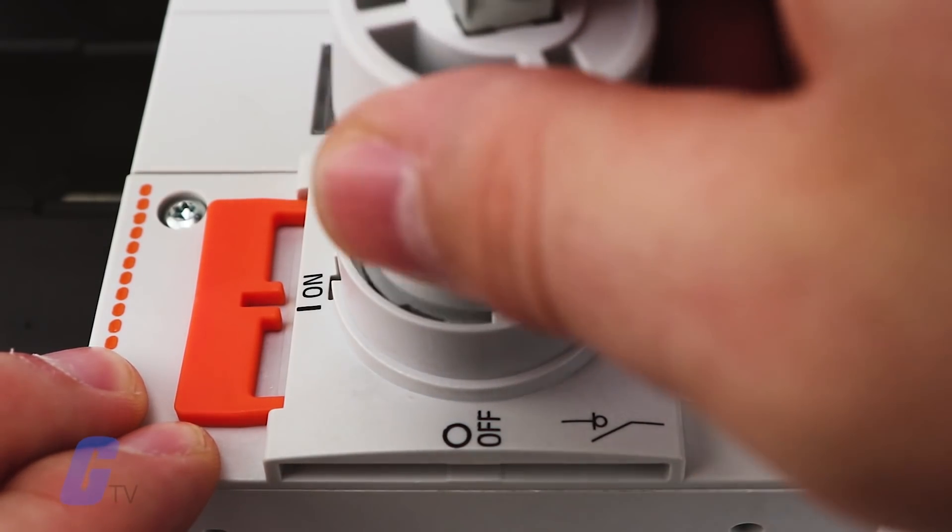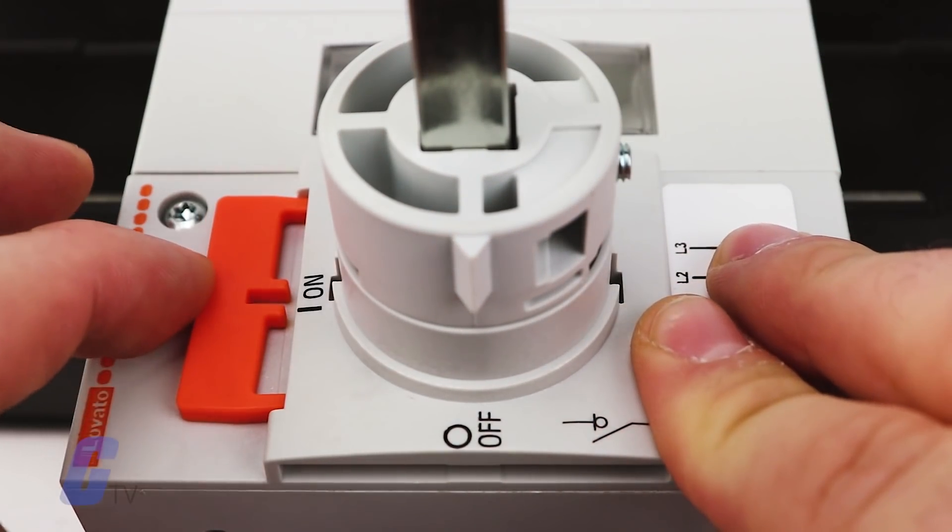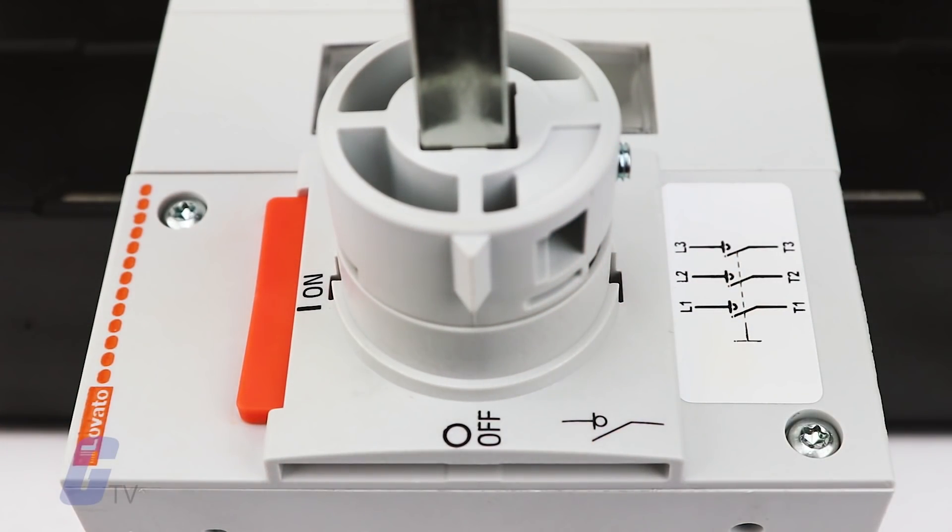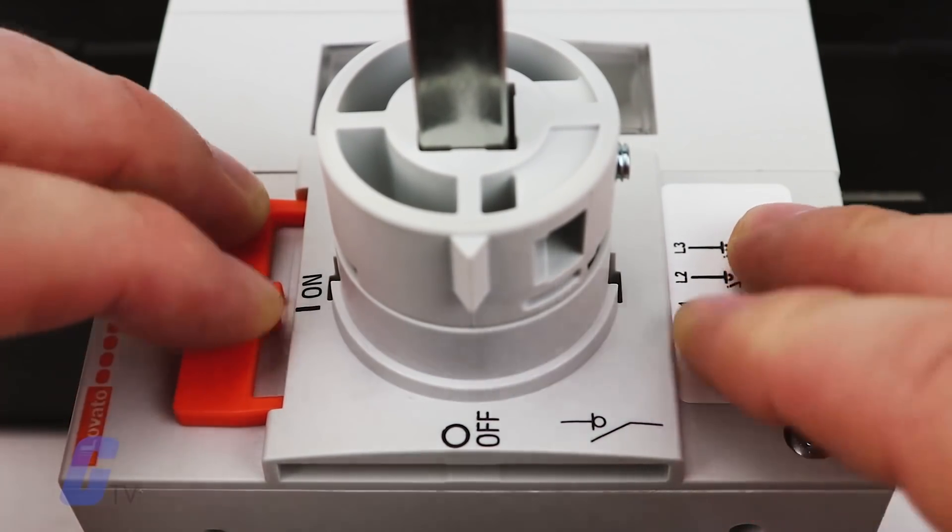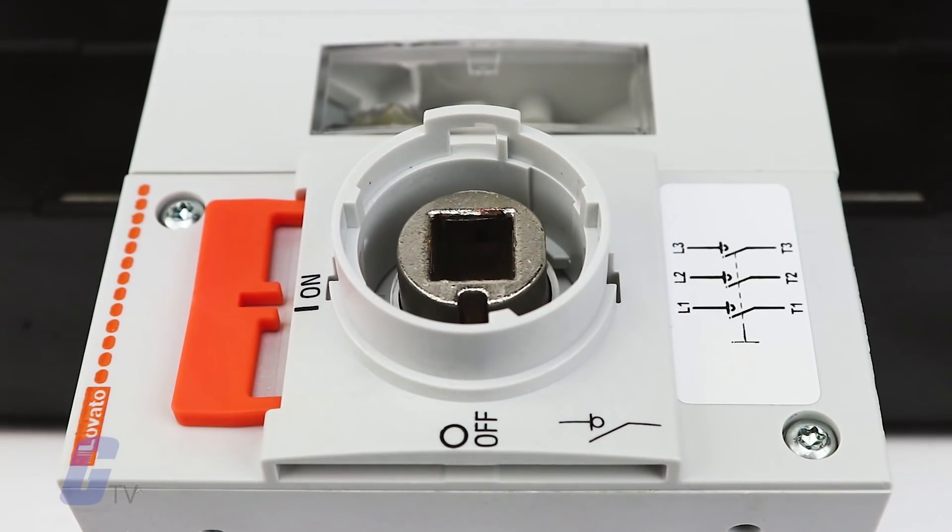Extension shafts can be mounted and removed very easily by simply snapping on the front of the switch, allowing fast installation and easy accessibility to the panel for maintenance purposes.